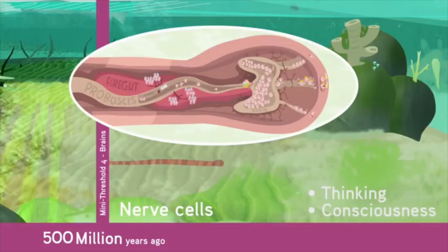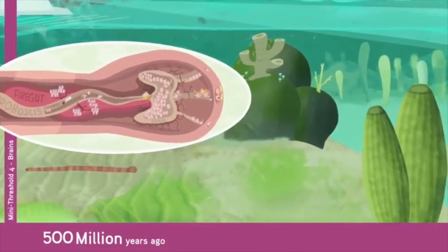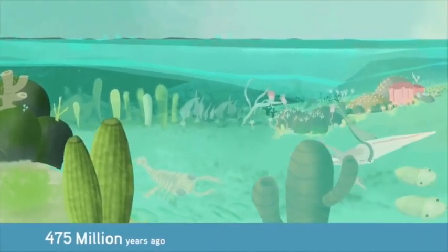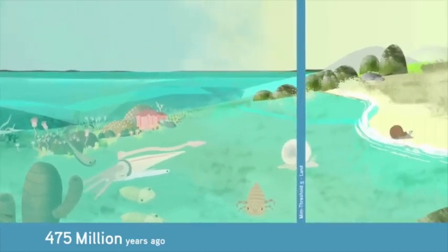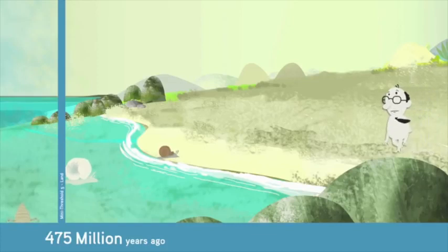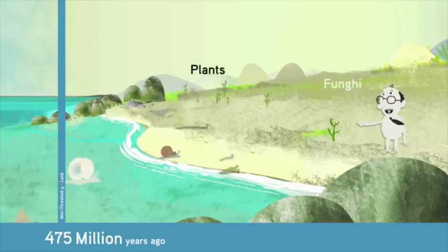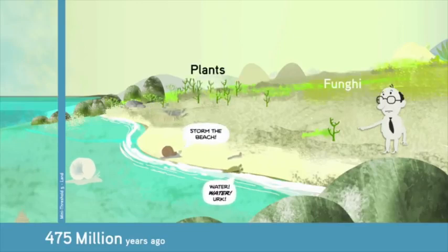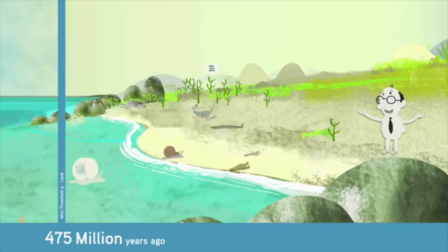Mini-threshold number 5 is when life moves from the ocean to land. From about 475 million years ago, some multicellular organisms, beginning with plants and fungi, left the oceans for land. There was a great incentive. This new environment was rich in new opportunities for organisms that could find ways to survive.